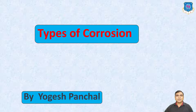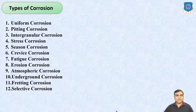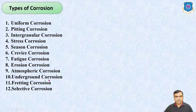In this video I am going to discuss about Types of Corrosion. Various types of corrosion are listed here: Uniform Corrosion, Pitting Corrosion, Intergranular Corrosion, Stray Corrosion, Season Corrosion, Crevice Corrosion, Fatigue Corrosion, Erosion Corrosion, Atmospheric Corrosion, Underground Corrosion, Fretting Corrosion and Selective Corrosion. Now let us see in detail each corrosion.